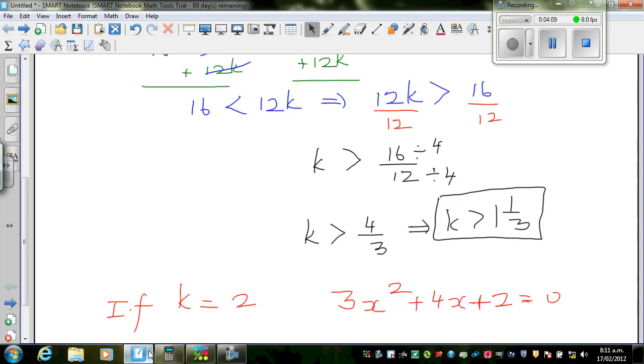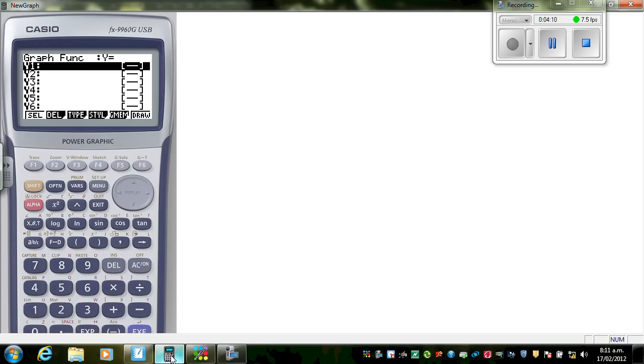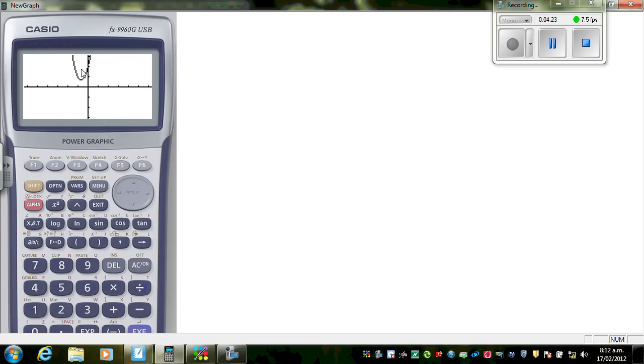So I have to have this. Let me type. So this is 3x² + 4x + 2, and see what happens there. Can you see? It is above the x-axis. It's not intersecting the x-axis at any point.